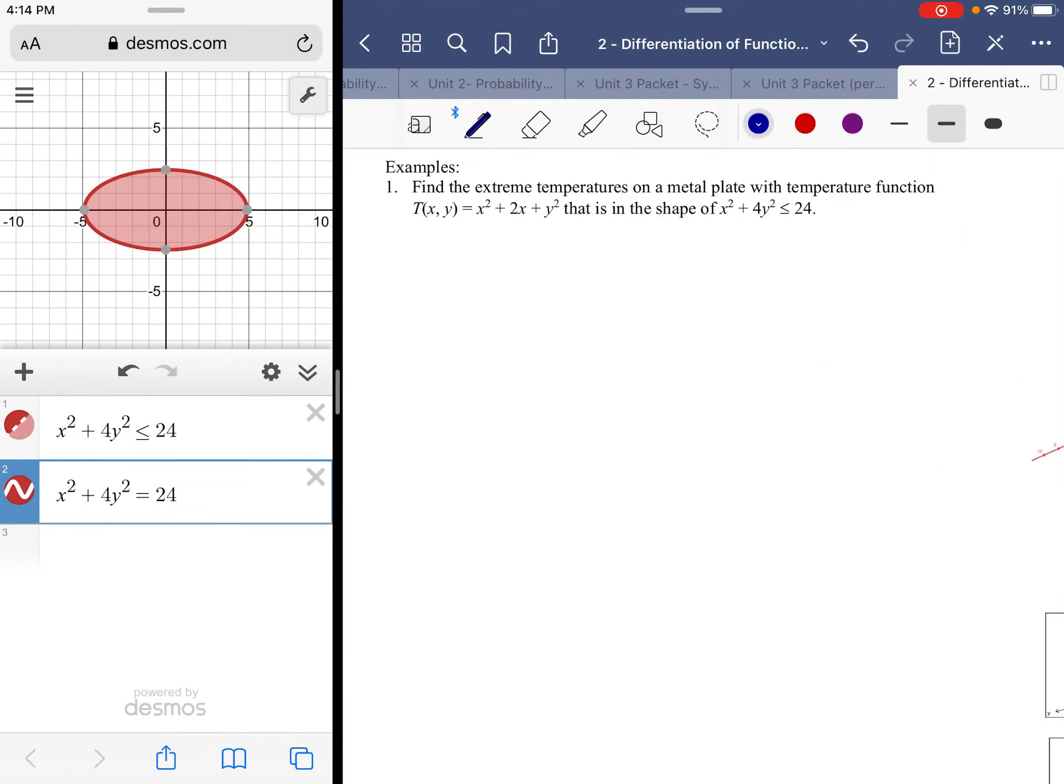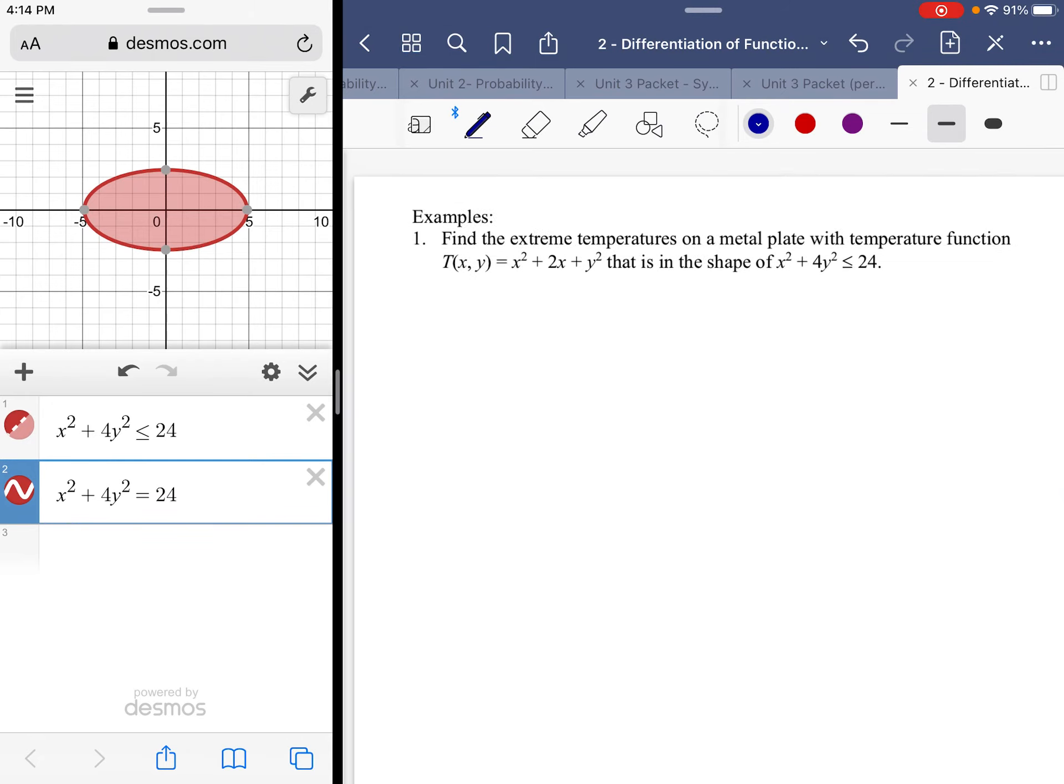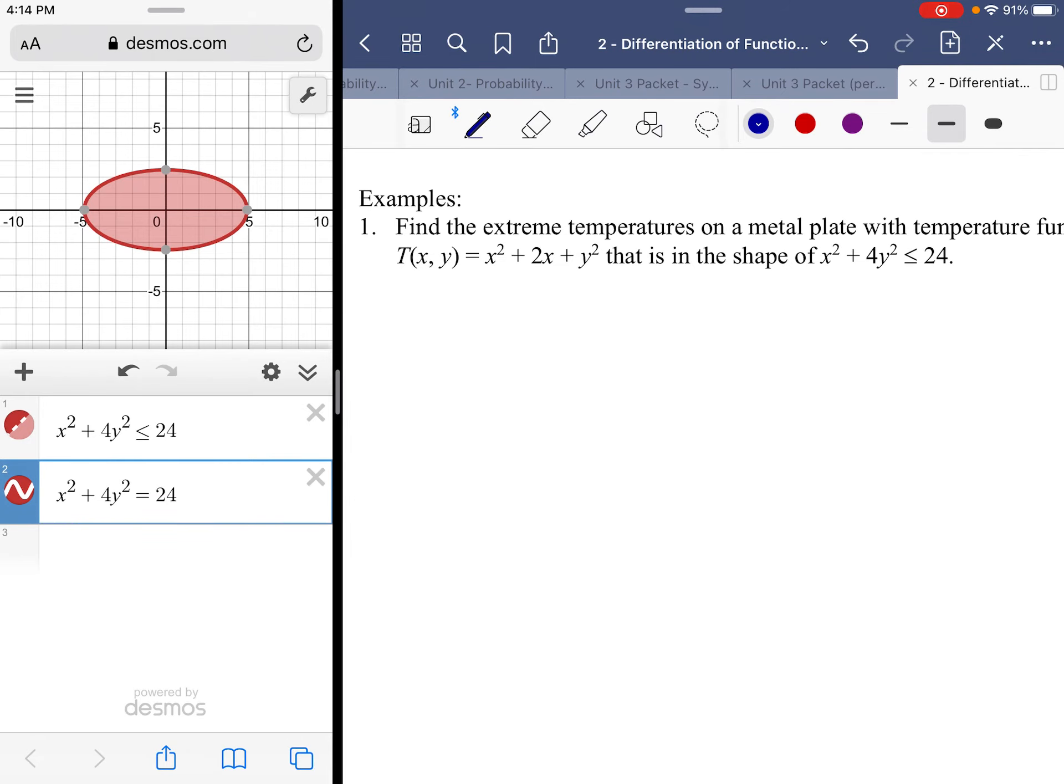We're looking at the solution for the extreme temperatures on a metal plate with a temperature function T(x, y) = x² + 2x + y² in the shape of x² + 4y² ≤ 24.